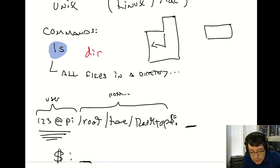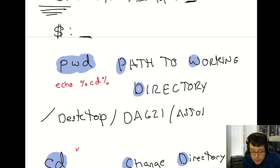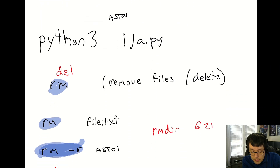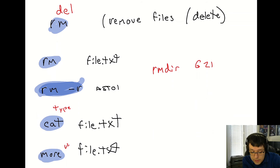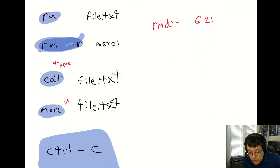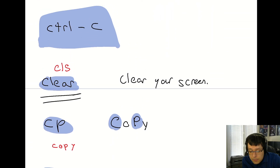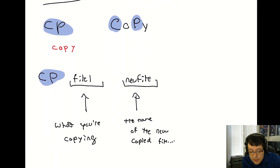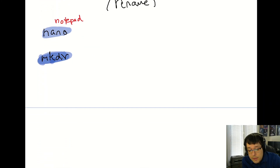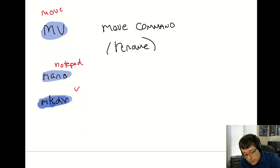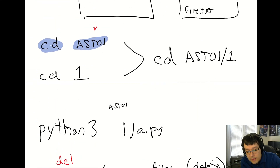To summarize the Windows equivalents: 'ls' → 'dir'; 'pwd' → 'echo %CD%'; 'cd' and 'cd ..' work the same; 'rm' → 'del'; to remove directories use 'rmdir'; 'cat' → 'type'; 'more' works the same; Control-C works the same; 'clear' → 'cls'; 'cp' → 'copy'; 'mv' → 'move'; 'nano' → 'notepad'; 'mkdir' works the same.